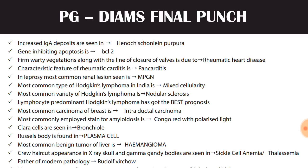Most common variety of Hodgkin's lymphoma worldwide is nodular sclerosis. Lymphocyte predominant Hodgkin's lymphoma has the best prognosis. The most common carcinoma of breast is intraductal carcinoma. The commonly employed stain for amyloidosis is Congo red with polarized light. Clara cells are seen in bronchioles. Russell bodies are found in plasma cells. Most common benign tumor of liver is hemangioma.